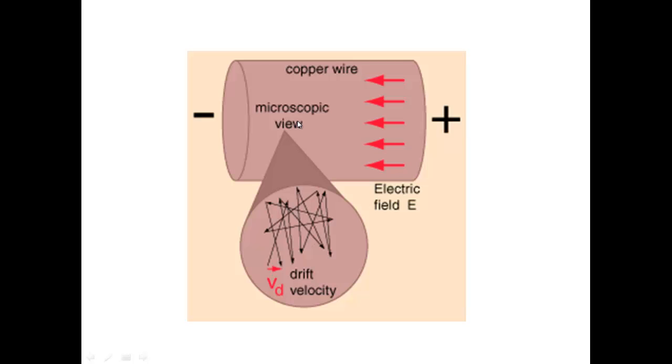But we know that the things carrying the charge are electrons, so these electrons are actually moving to the right. Now when you turn the voltage on, they don't fly through the metal at the speed of light. They basically have a very slow average velocity.